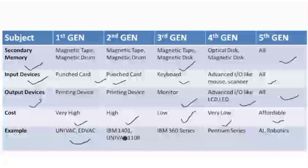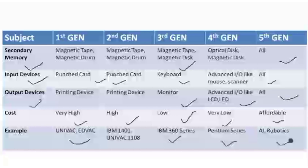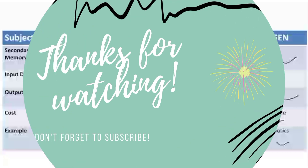Here are some examples: in the first generation, UNIVAC and ADVAC; in the second generation, IBM 1401 and UNIVAC 1108; in the third generation, IBM 360 series; in the fourth generation, the Pentium series; and in the fifth generation, Artificial Intelligence and Robotics. So these are the differences among the five generations of computers in a very brief manner. Thank you so much.